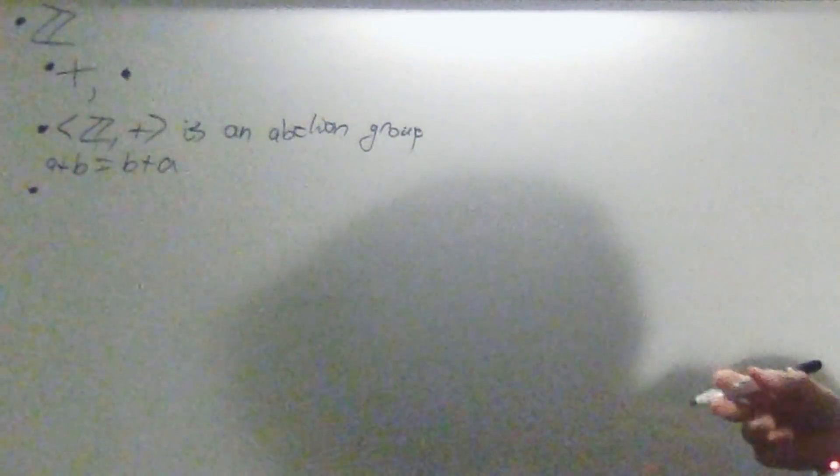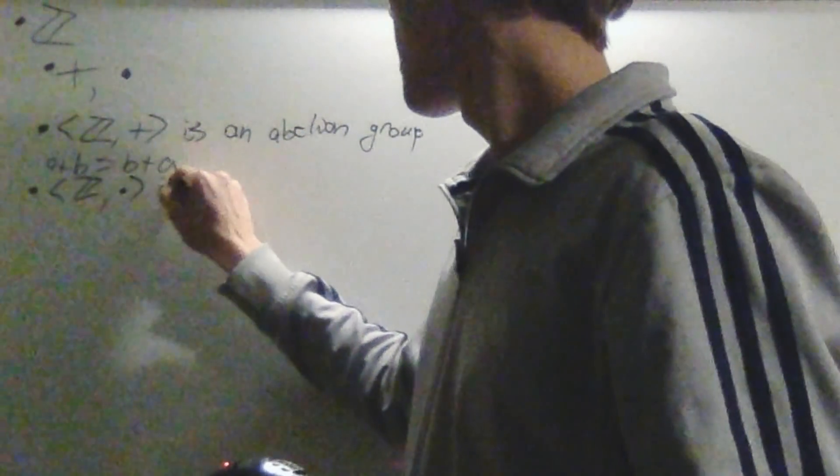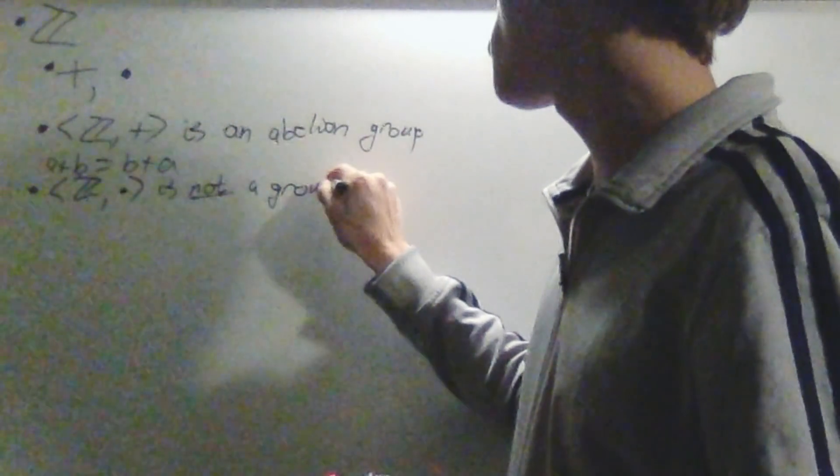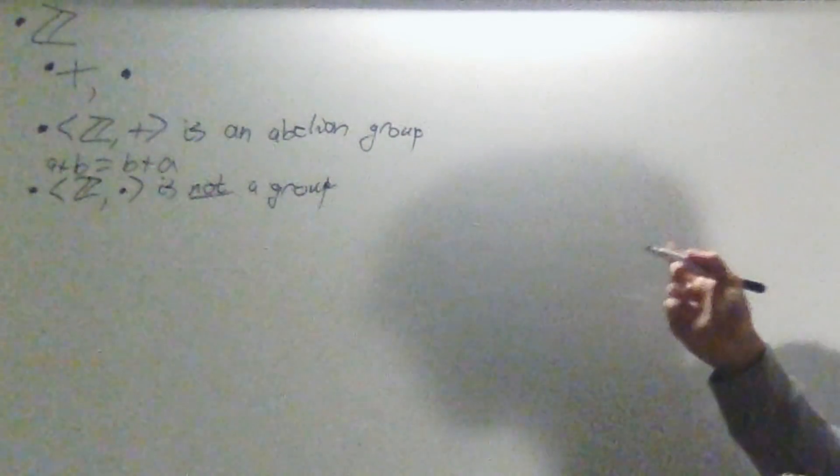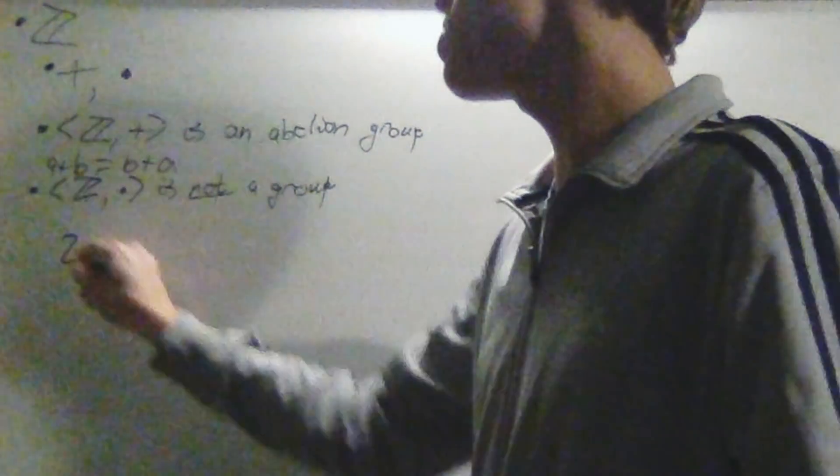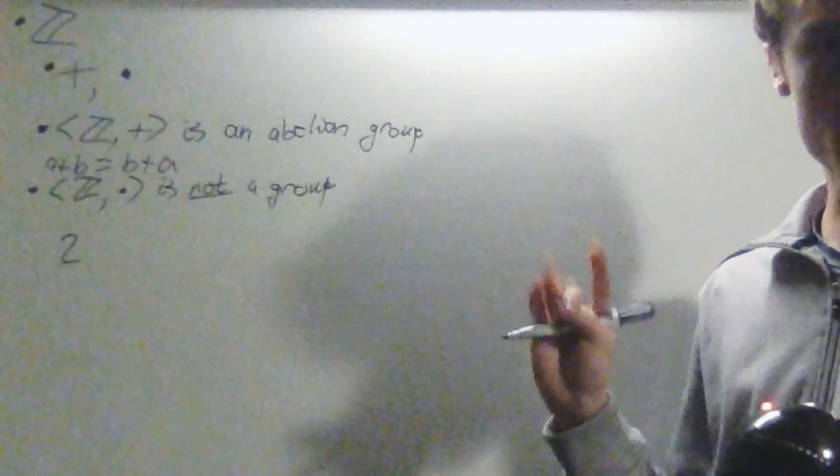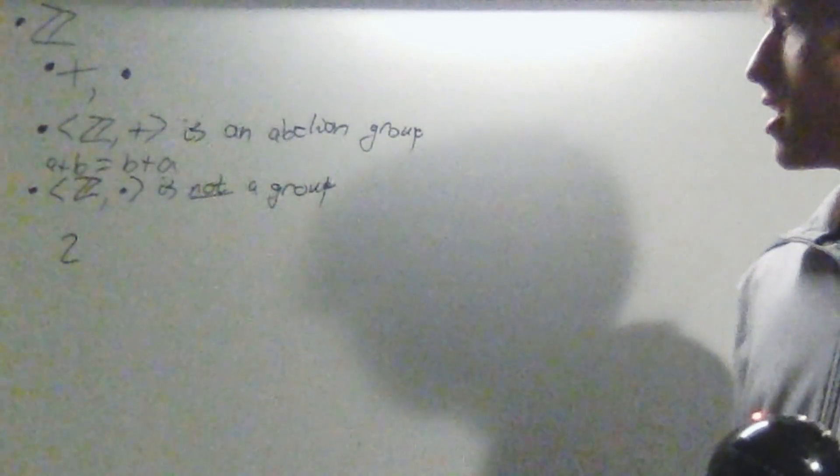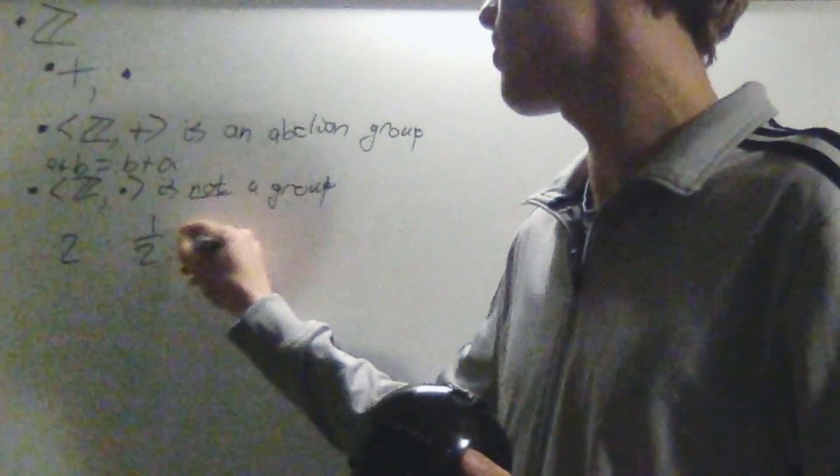Another thing you should notice is that Z under multiplication is not a group. It's not a group at all. That is because, for instance, two. What is the inverse of two? For it to be a group, every single element has to have an inverse. Well, the inverse of two is one half, because two times a half is one.